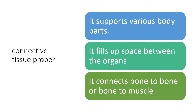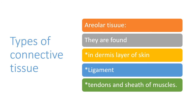Connective tissue proper, the first type of connective tissue, supports various body parts, fills up space between organs, and connects a bone to another bone and a muscle to a bone. It is further divided into two types: areolar tissue and adipose tissue. Areolar tissues are simple and most widely distributed connective tissues which form a continuous layer beneath the skin of the animal body. They provide elasticity to our skin, tendons, and sheath of muscles. Areolar tissues are found in the dermis layer of the skin, in ligaments, tendons, and the sheath of muscles.